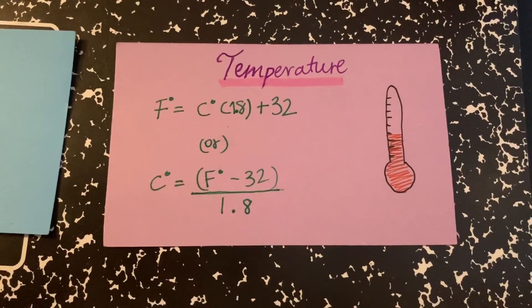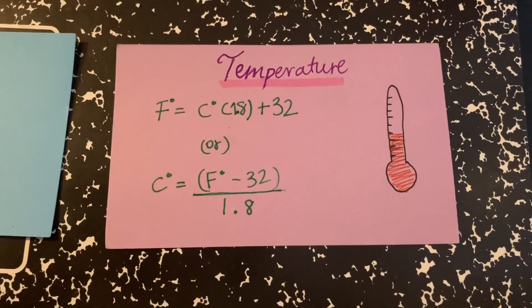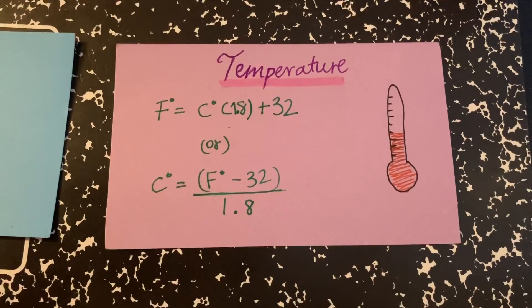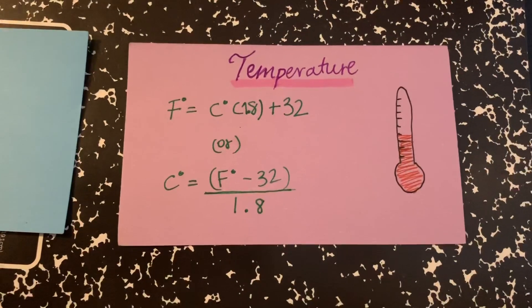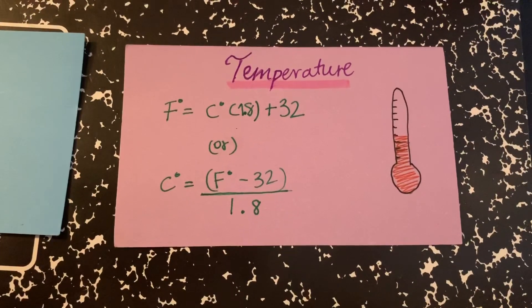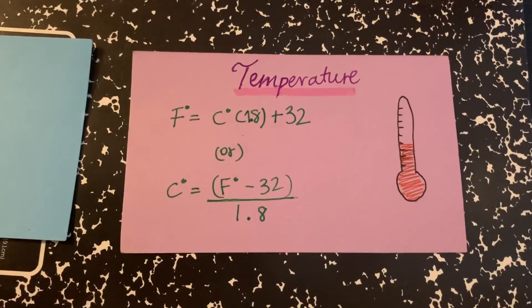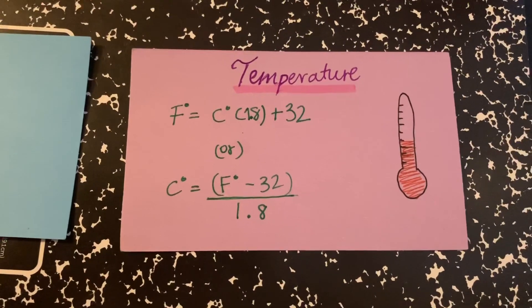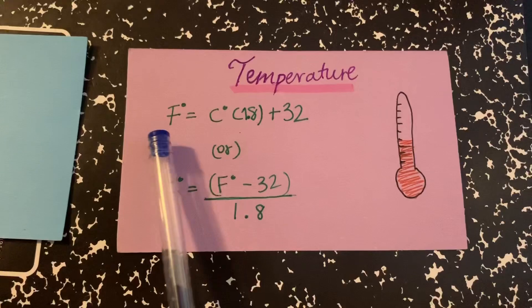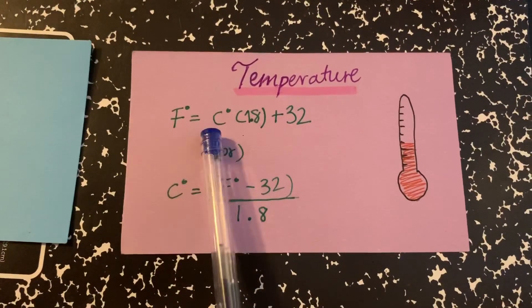Lastly, but not least, is the temperature system. And this one is very easy. There are only two equations you need to memorize when you want to convert from Fahrenheit to centigrade, so it's centigrade to Fahrenheit. So what you do is, it says, the equation says Fahrenheit is equal to centigrade.